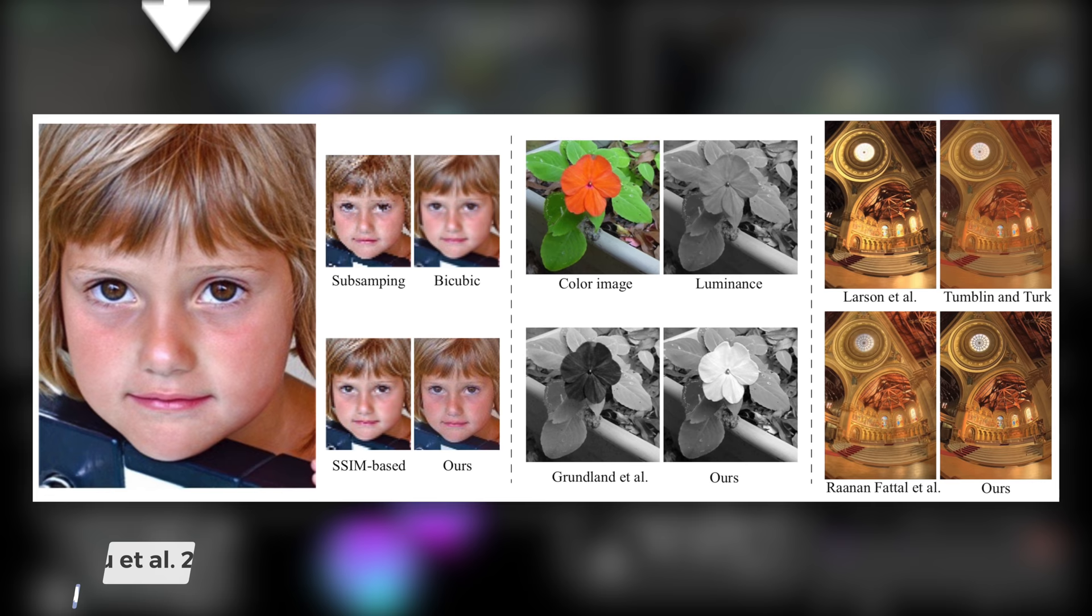Imagine that we have this high fidelity input image, and due to file size constraints, we have to produce a smaller version of it. If we do it naively, this is what it looks like. Not great, right? To do a better job at this, our goal would be that the size of the image would be reduced but while still retaining the intricate details of this image.